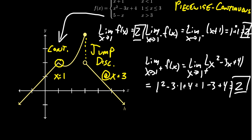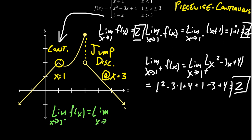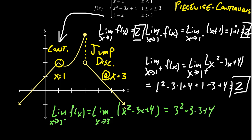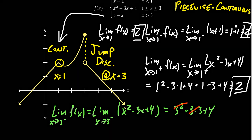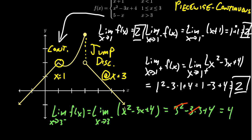Now we see a different thing happening at x equals 3. For the left-hand limit as x approaches 3 of f of x, we're in the domain that gives us the parabola x squared minus 3x plus 4. Evaluating at 3: 3 squared minus 3 times 3 plus 4 gives us 9 minus 9 plus 4, and those 9s cancel, leaving a value of 4. That's the left-hand limit.